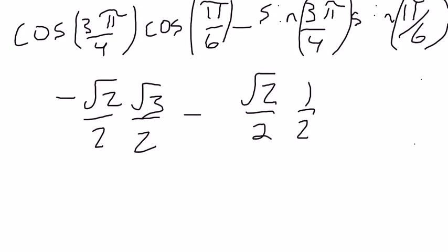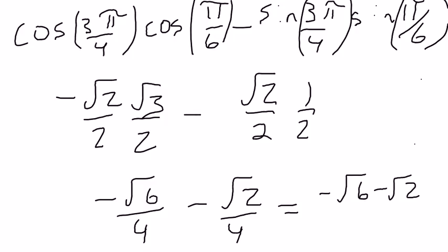Multiply these fractions to get negative square root of 6 over 4 minus the square root of 2 over 4, for an answer of negative square root of 6 minus the square root of 2 all over 4. So this is what cosine equals.